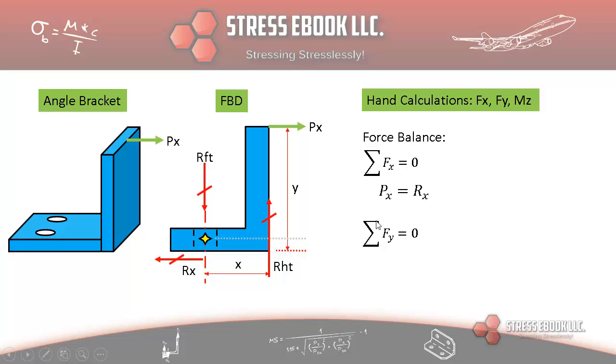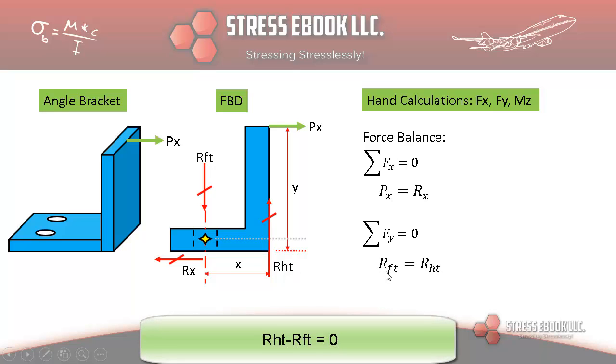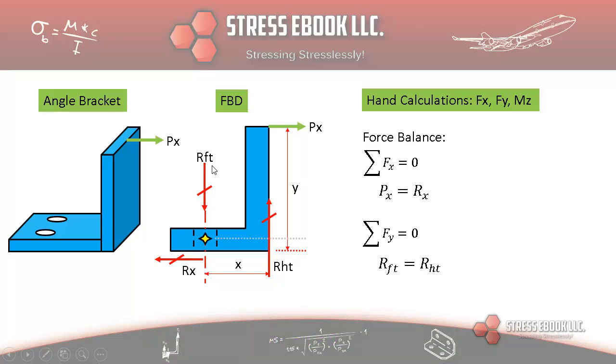The second equation is Sigma FY equal to zero. And therefore what we have is RFT is equal to RHT because there's nothing else balancing this particular fastener reaction. There's only one other reaction. Now the key point here is that we are assuming there won't be any heel toe underneath this part of this angle bracket.